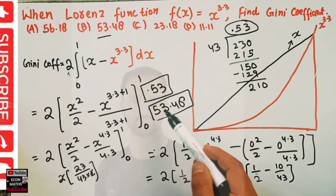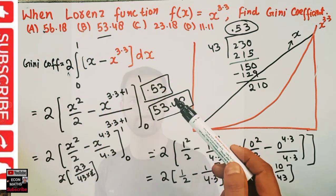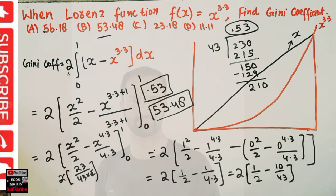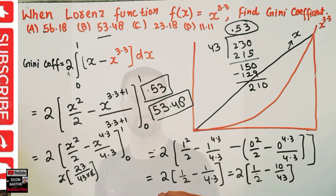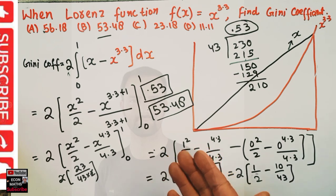So our Gini coefficient is approximately 53 percent, which corresponds to option 53.48. I hope I made myself clear in this video. I have also made a video on how to construct the Lorenz curve and how to calculate the Gini coefficient shown by integration.